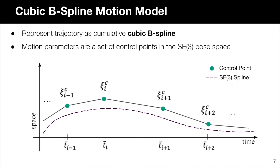In addition, in order to represent the robot trajectory at arbitrary camera firing times, we utilize a continuous-time motion model. The continuous-time motion model can take many forms, but in our framework we employ a cumulative cubic B-spline model parameterized by a set of control points in the SE3 space. We associate each key multi-frame with a control point, and the shape of the trajectory in each time interval is defined by the four neighboring control points. As a result, trajectory estimation is equivalent to optimizing the set of control points.